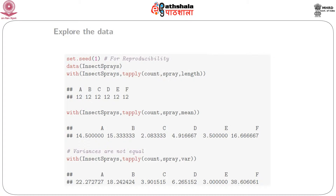We start by inspecting the mean and the variances. The command 'with(InsectSprays, tapply(count, spray, mean))' applies the mean function to count, grouped by spray. We get that for spray A the mean is 14.5, for spray B it is 15.33, for spray C it is 2.08, and so on for all 6 sprays.